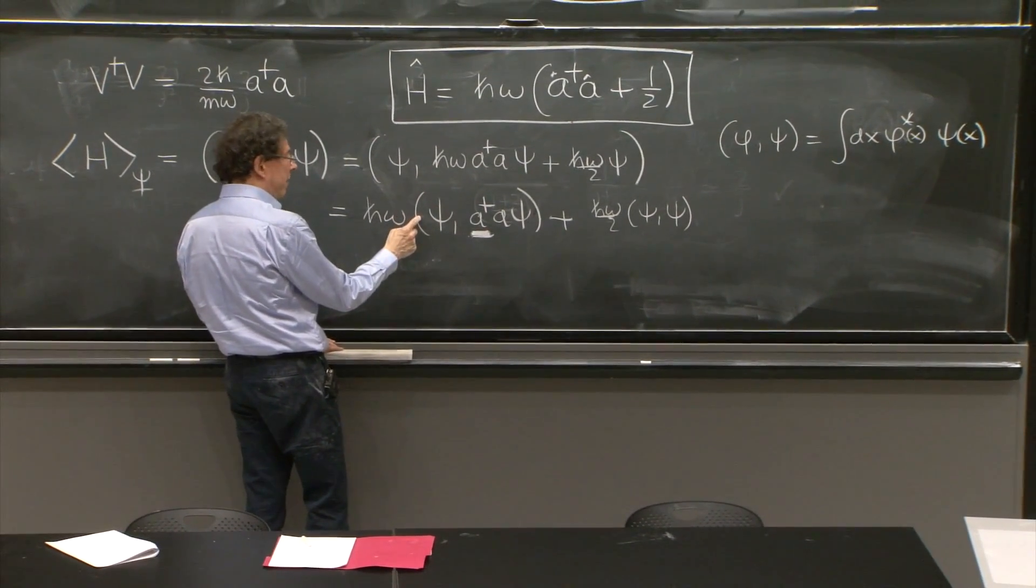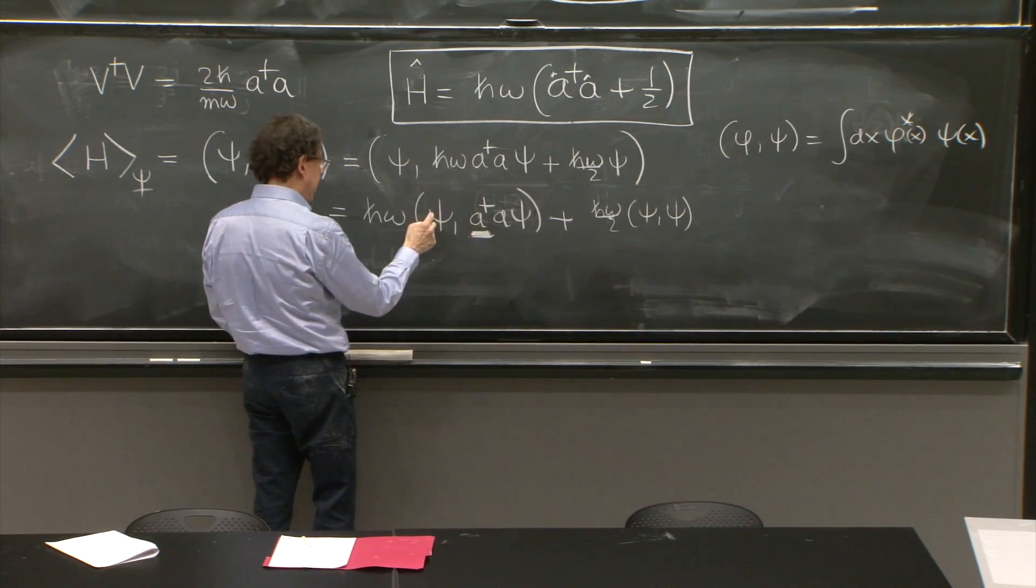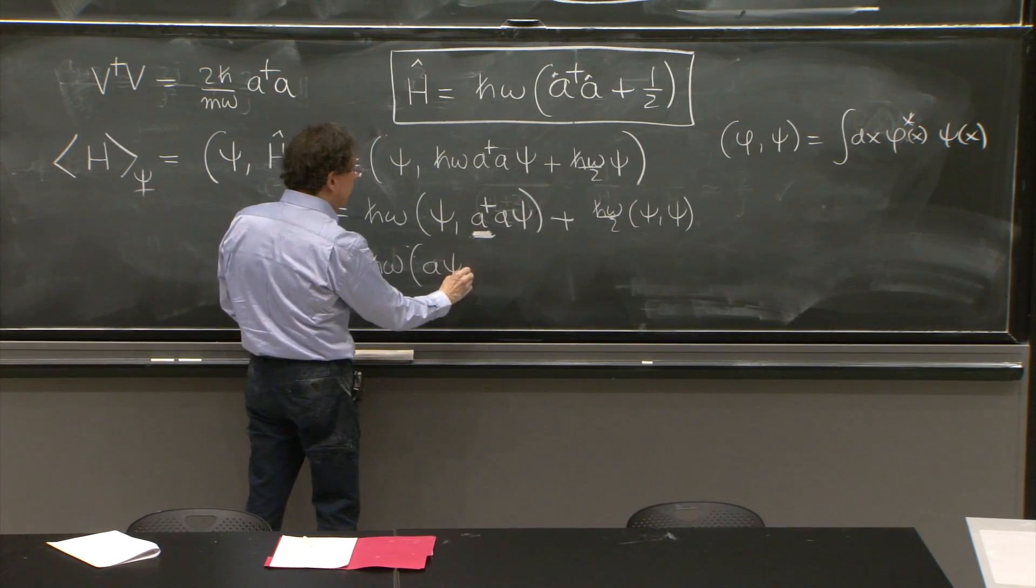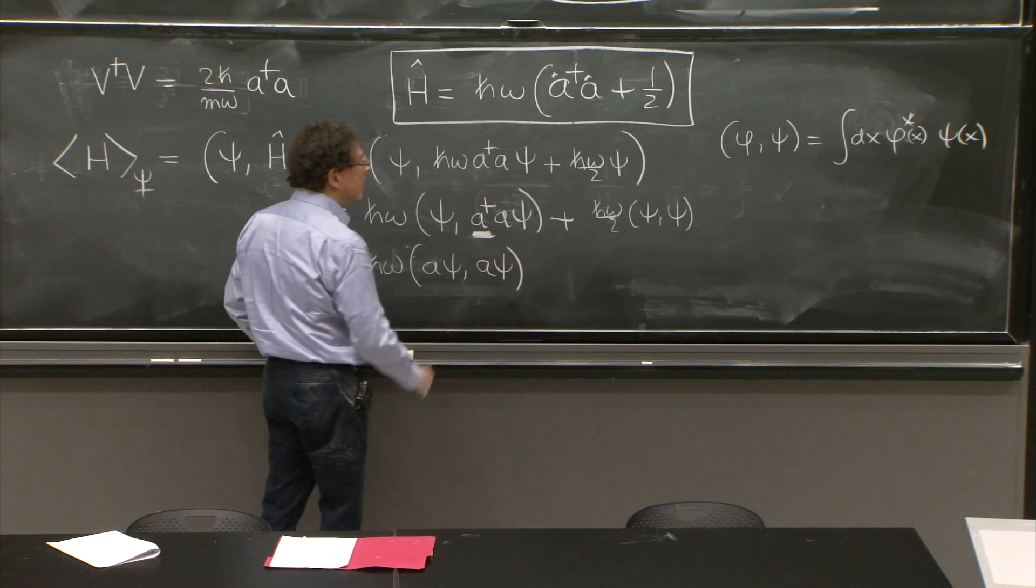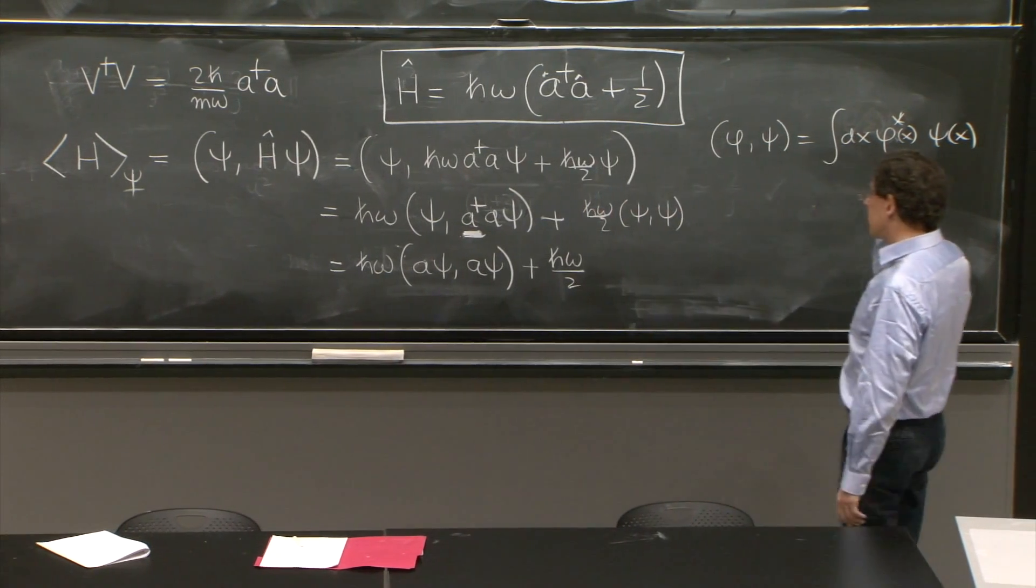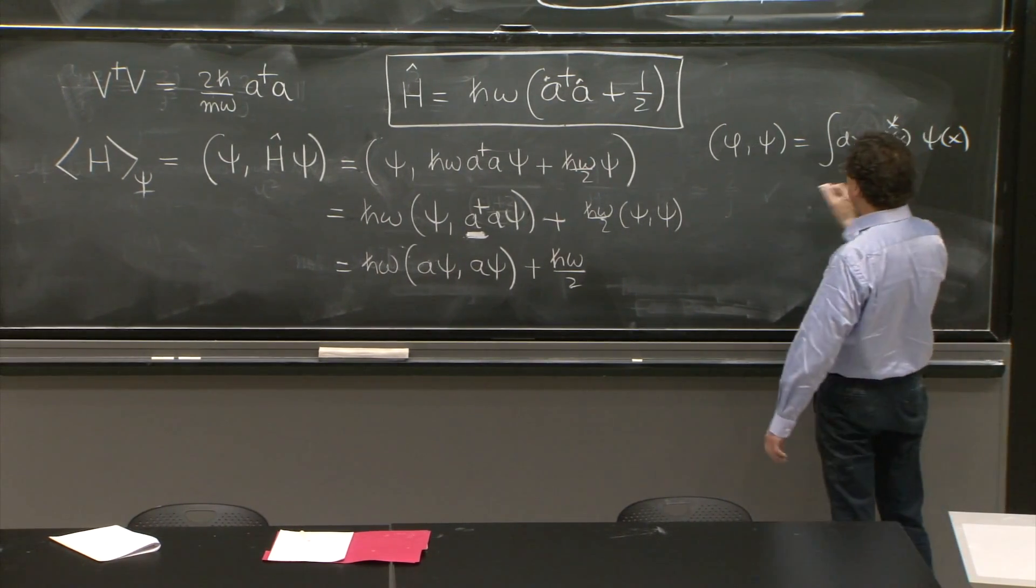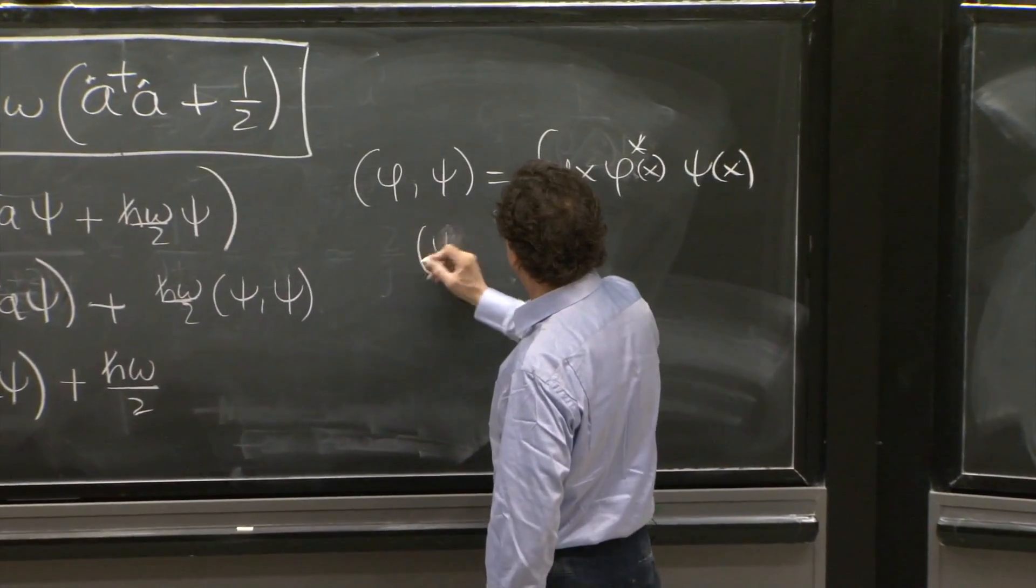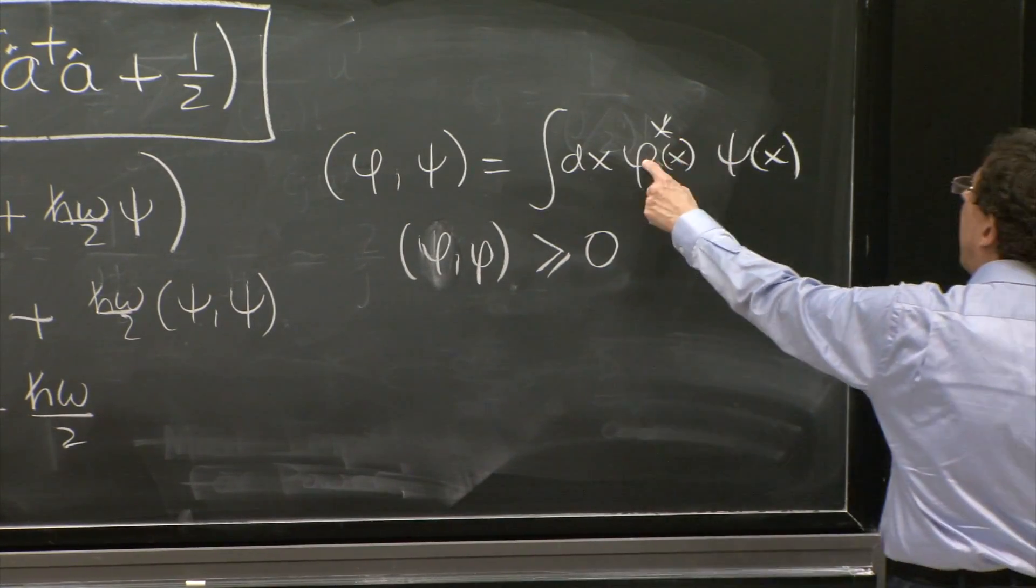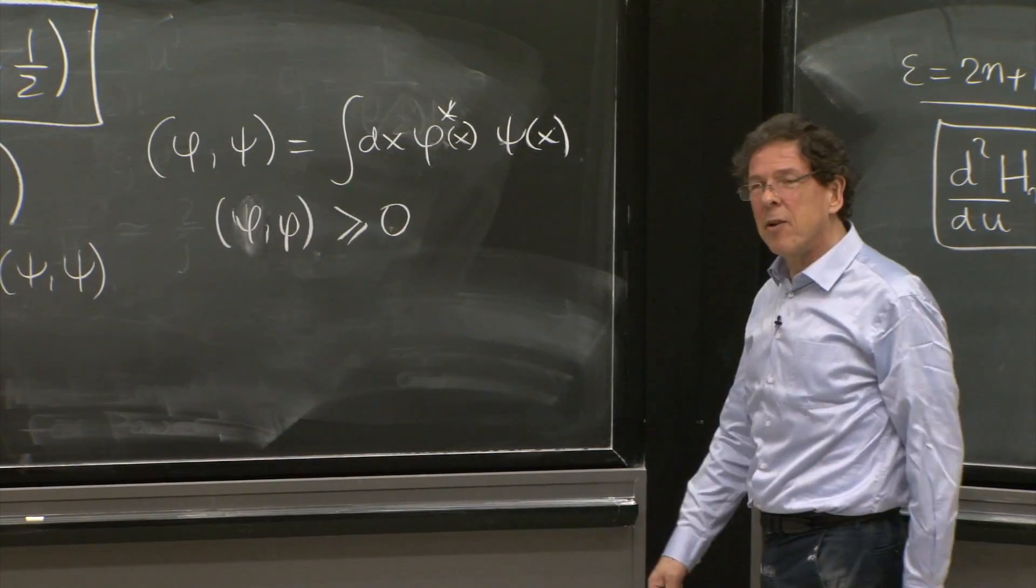But I must put the dagger of this operator. And the dagger of a dagger is a. So this is h omega a psi a psi plus h omega over 2. Now, here comes the next thing. If this is an inner product, any phi phi is greater or equal than 0, because you would have phi star phi, and that's positive. So any of that integral is greater or equal than 0.